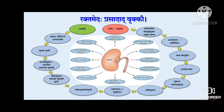In Ayurvedic organogenesis, the kidney (vrikka) is said to be formed from the finest parts of kapha and meda. So whenever there is kapha and meda dushti, the vrikka will get affected and there will be vrikka dushti. Whatever shaitilya occurs — in terms of mesangial expansion and basement membrane thickening — can be correlated with this shaitilya caused by kleda.